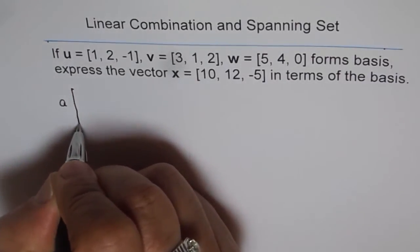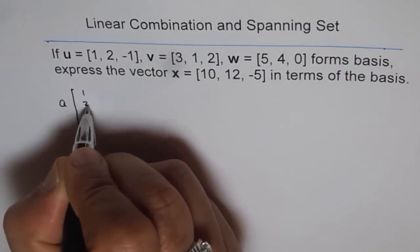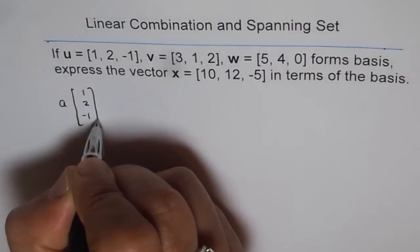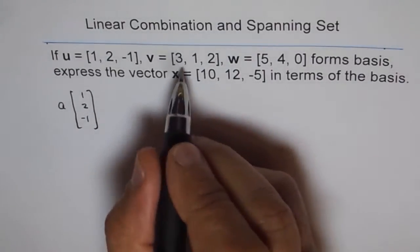In other words, we say a times vector u, which is 1, 2, minus 1. So this is a column matrix notation.